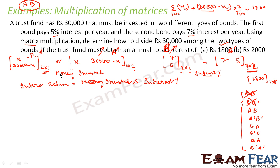For a dash×b: that is 1×2 times 2×1. The inner dimensions are both 2, so they match. Multiplication is possible. And the output is 1×1 — exactly what we need. So a dash×b is a valid option.